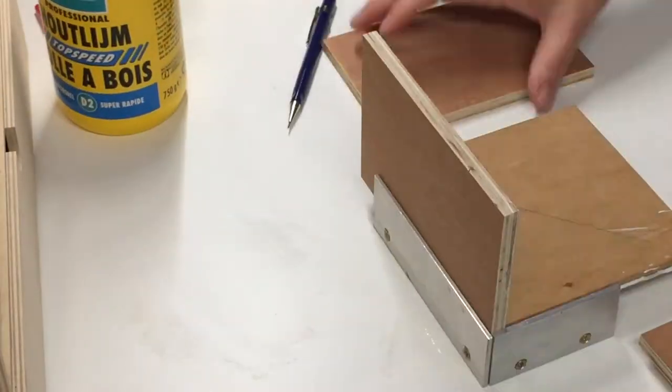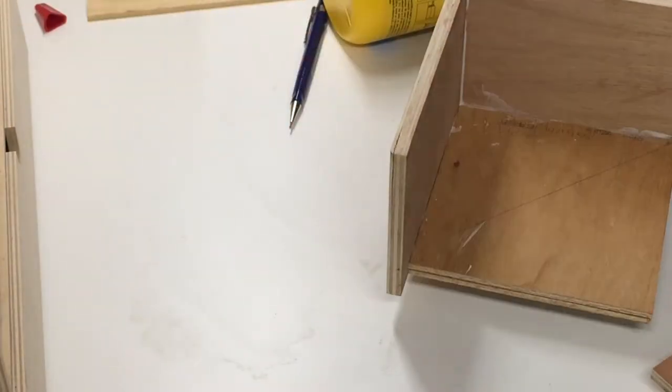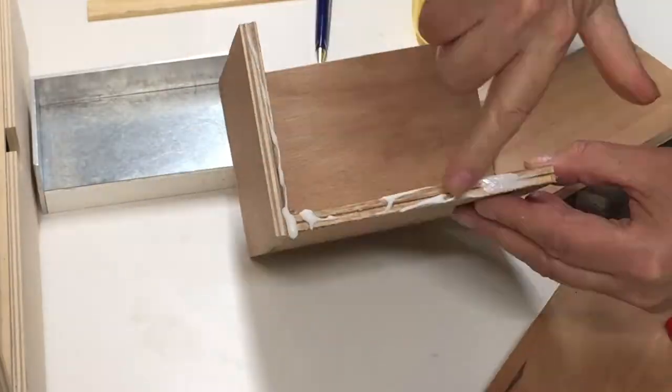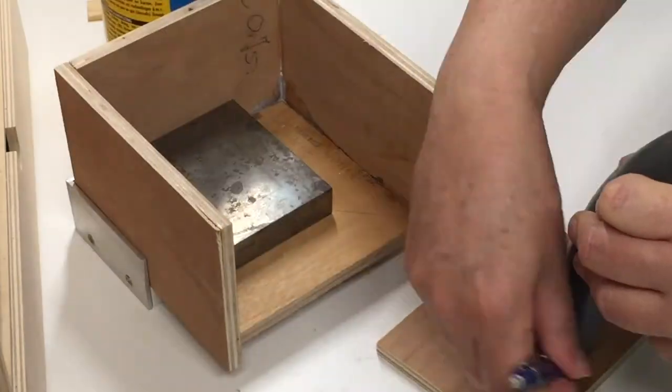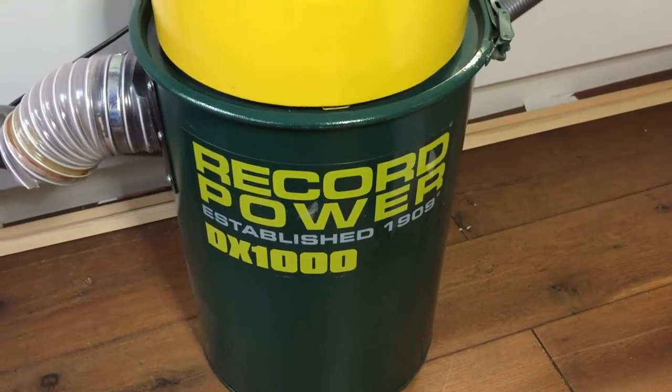Gluing the box together was straightforward, even though my gluing jig was a little bit small for this job. And I cut a hole in one of the side panels to fit my shop vacuum hose attachment.